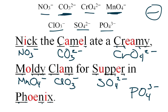So this totally doesn't mean anything, it's just a mnemonic, and if this works for you, that's good. So get yourself familiar with those ions, and then maybe this phrase will help you come up with it. At the bottom of the quiz you could write that out and figure these out really quick. Nick the camel ate a creamy, moldy clam for supper in phoenix, and these other words in between are just fill-in words, so they don't mean anything.